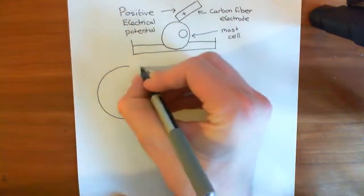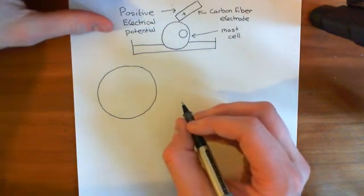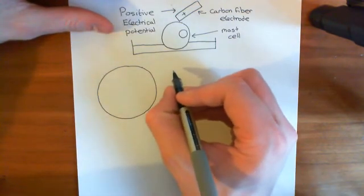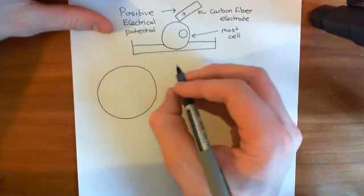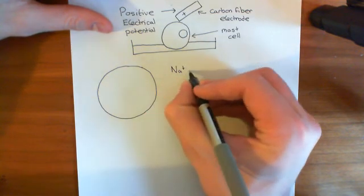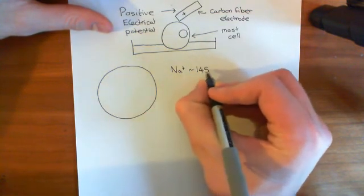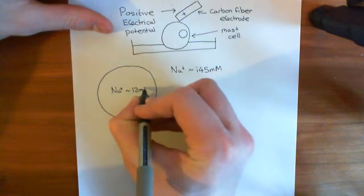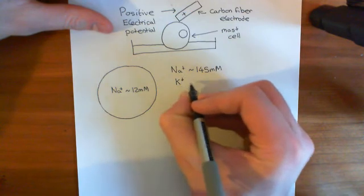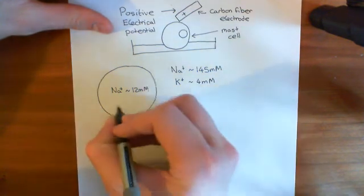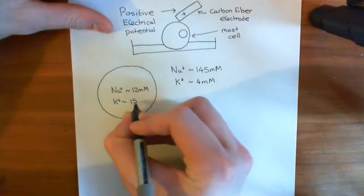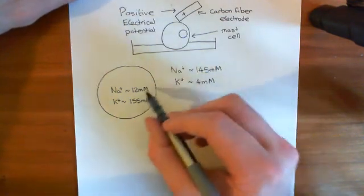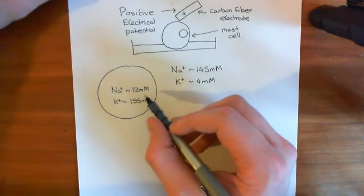The electrical potential difference across this cell membrane arises fundamentally because you have differing concentrations of sodium and potassium inside and outside of the cell. The extracellular concentration of sodium is approximately 145 millimolar, whereas the intracellular sodium concentration is approximately 12 millimolar. The intracellular potassium concentration is approximately 155 millimolar — so sodium is much higher outside the cell by about 12 times, and potassium is much higher inside the cell by about 40 times.